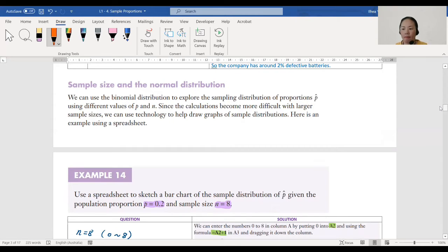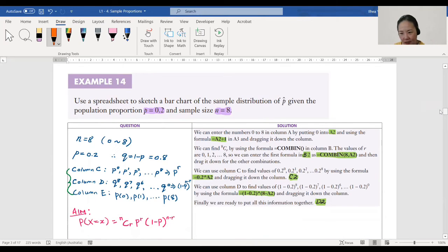Katie, can you read this? Sample size and the normal distribution. We can use the binomial distribution to explore the sampling distribution of proportions p hat using different values of p and n. Since the calculations become more difficult with larger sample sizes, we can use technology to help draw graphs of sample distributions. Here is an example using a spreadsheet.